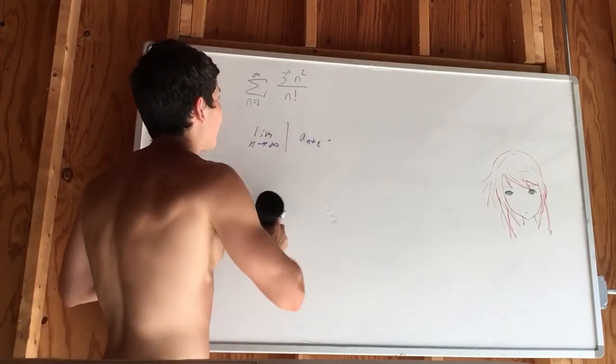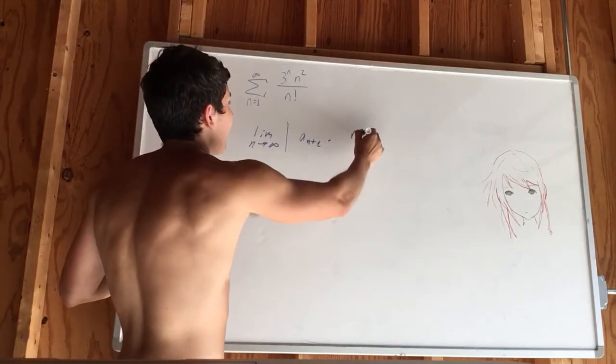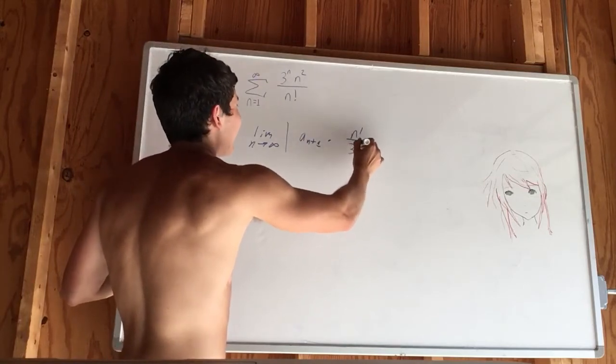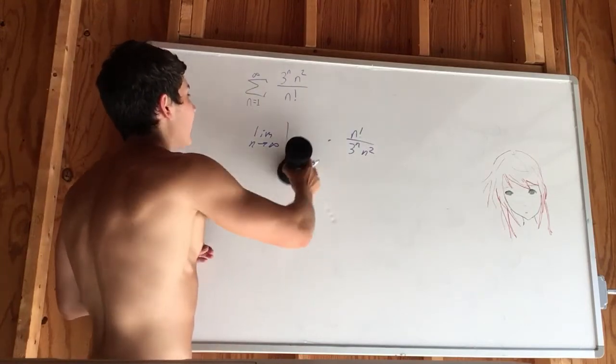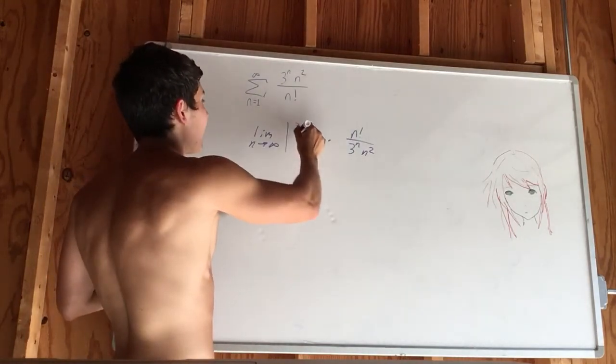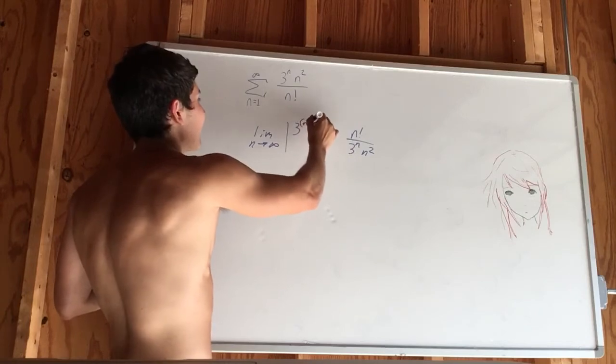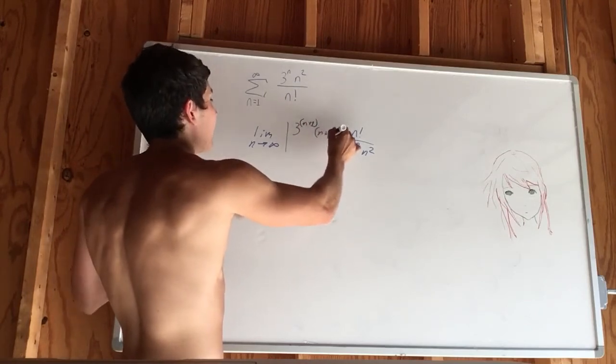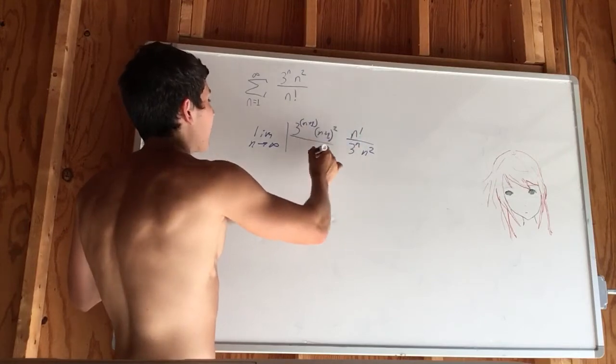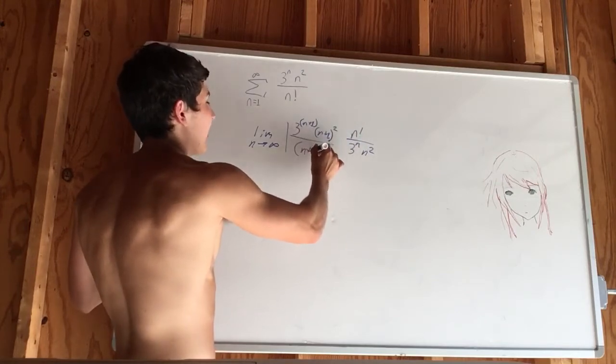So this reciprocal right there is n factorial over 3 to the n times n squared. And this is just plugging in n plus 1 wherever we see an n, so like this: n plus 1 squared over n plus 1 factorial.